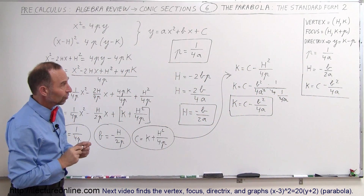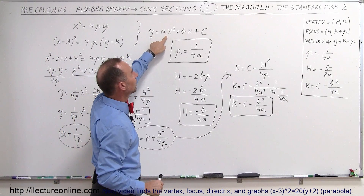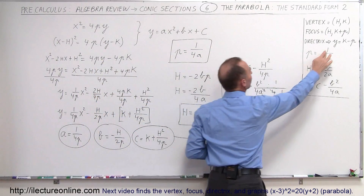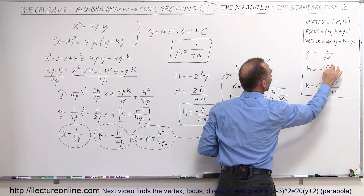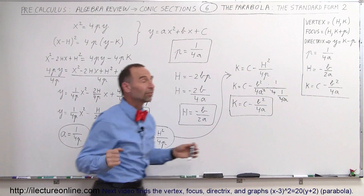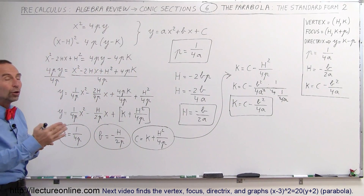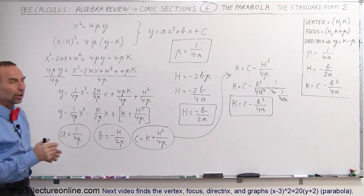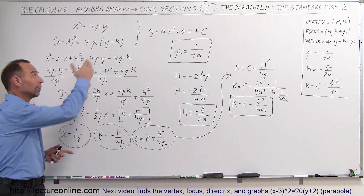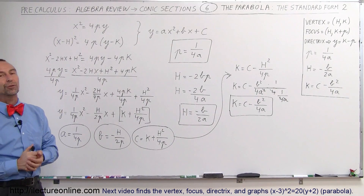Now we have expressions for p, h, and k. If we have an equation in quadratic form, we can convert to standard form using p equals 1 over 4a, h equals minus b over 2a, and k equals c minus b squared over 4a. We're going to use this knowledge to solve equations, learn how to graph them, and go back and forth between the standard form and the quadratic form. Stay tuned for more videos.